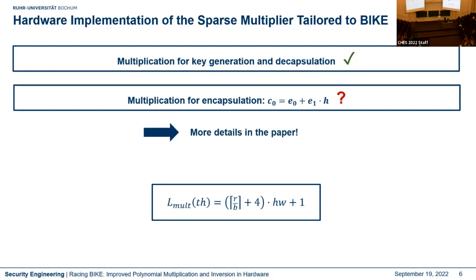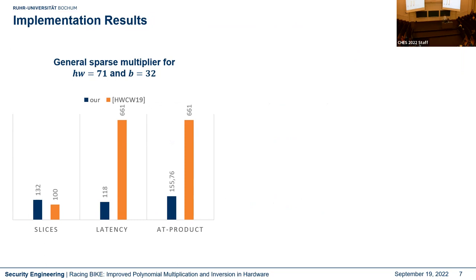By scaling parameter b — the internal bandwidth — you can control the trade-off between area and latency. We instantiated our multiplier for a Hamming weight of 71 for the sparse polynomial and b equal to 34 for the first security level of BIKE, and compared it to a 2019 implementation. We consume slightly more slices but are definitely faster: one multiplication in 180 microseconds compared to 661 microseconds.